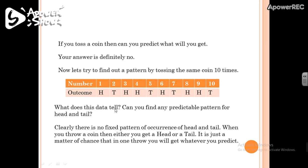So what does this data tell? Can you find any predictable pattern for head and tail? The answer is no. We cannot find any predictable pattern. This data doesn't tell us anything about what we will get after each toss. Since there is no fixed pattern of occurrence of head and tail, whenever you throw a coin, you will either get a head or a tail.